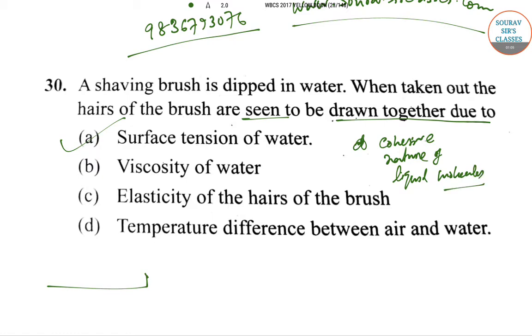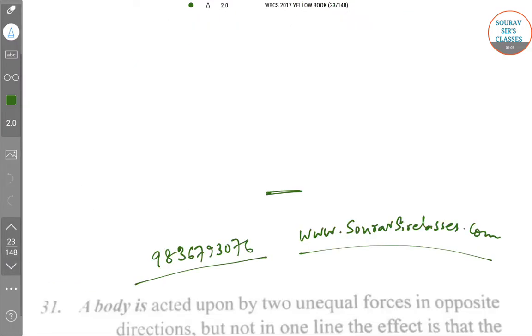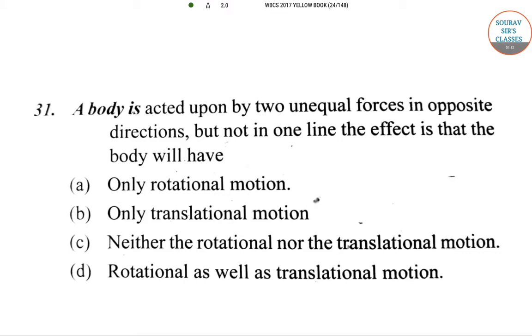Question 31: A body is acted upon by two unequal forces in opposite directions, but not in one line. The effect is that the body will have rotational as well as translational motion. Translational motion is the motion by which a body shifts from one point to another, like a bullet fired from a gun. Rotational motion deals with rigid bodies, like a fan.